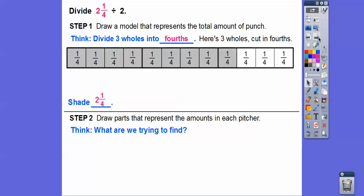So now that we've done that, we're going to draw the parts that represent the amount that are in each pitcher. How many pitchers are there? Well, there's two pitchers. So what are we trying to find? We're trying to find how much is in each of the two groups, the two pitchers right there. So we're going to cut this up, so in half. So each one gets one quart and one quart, and then we're going to split this fourth into halves right there.